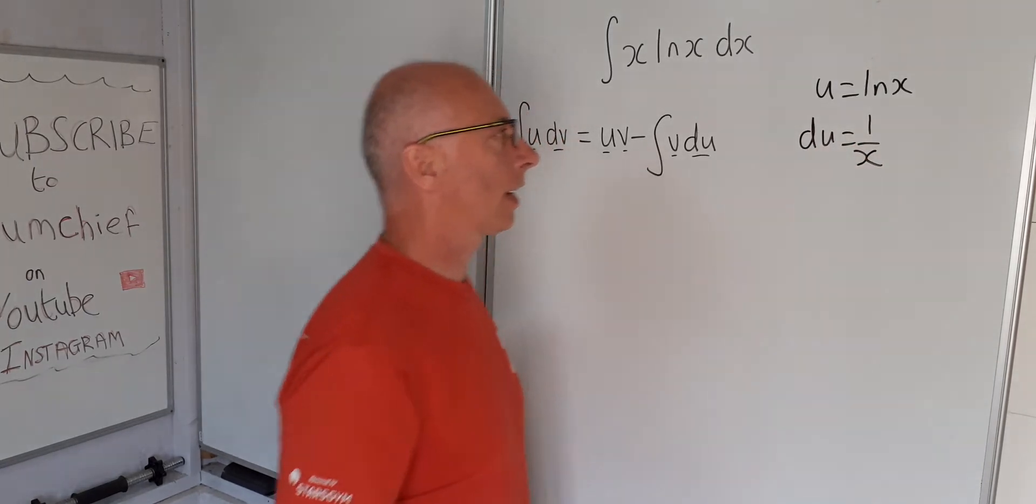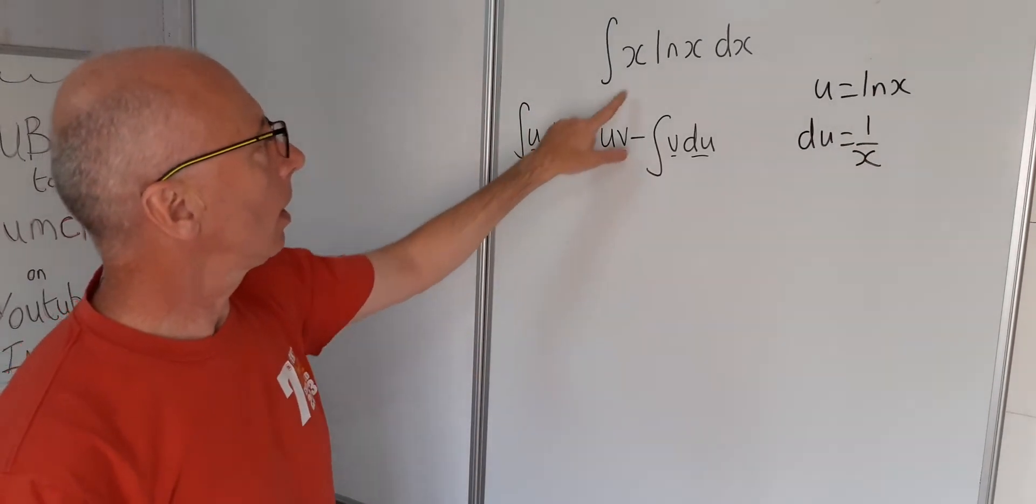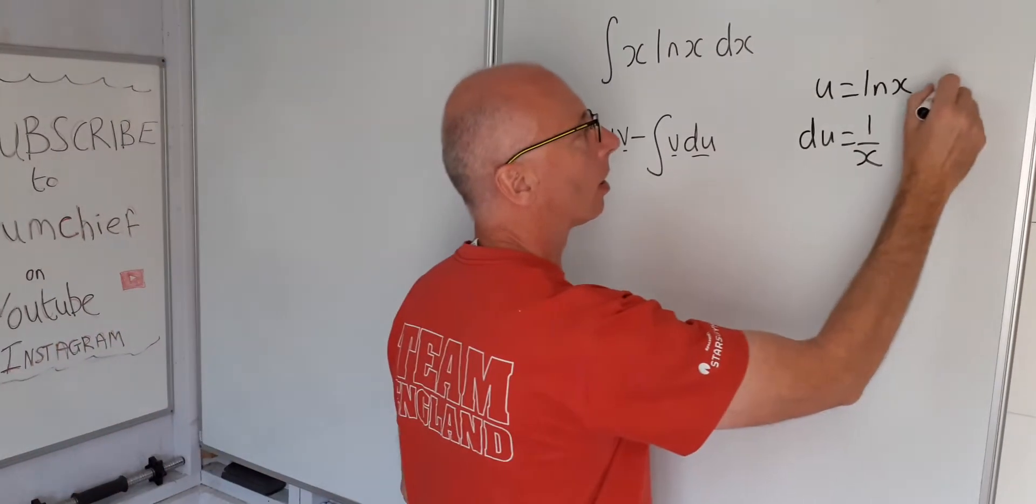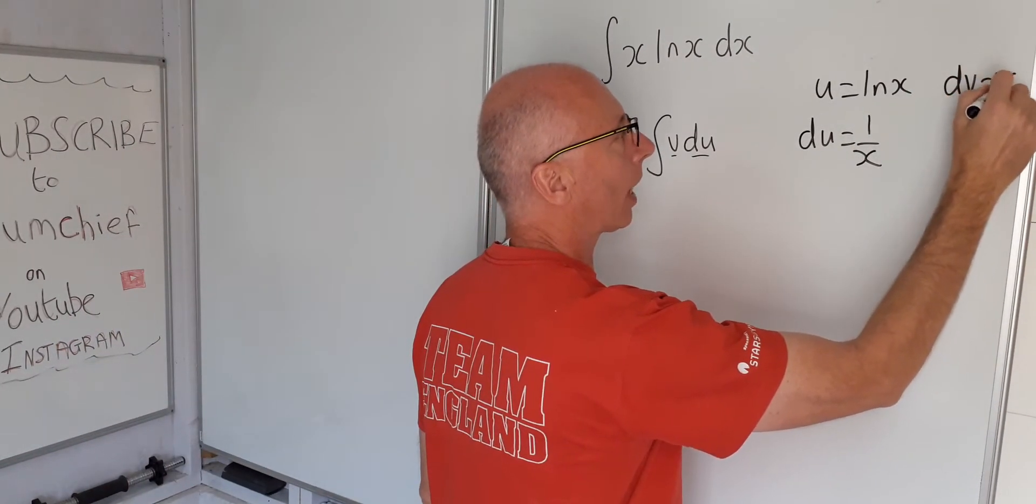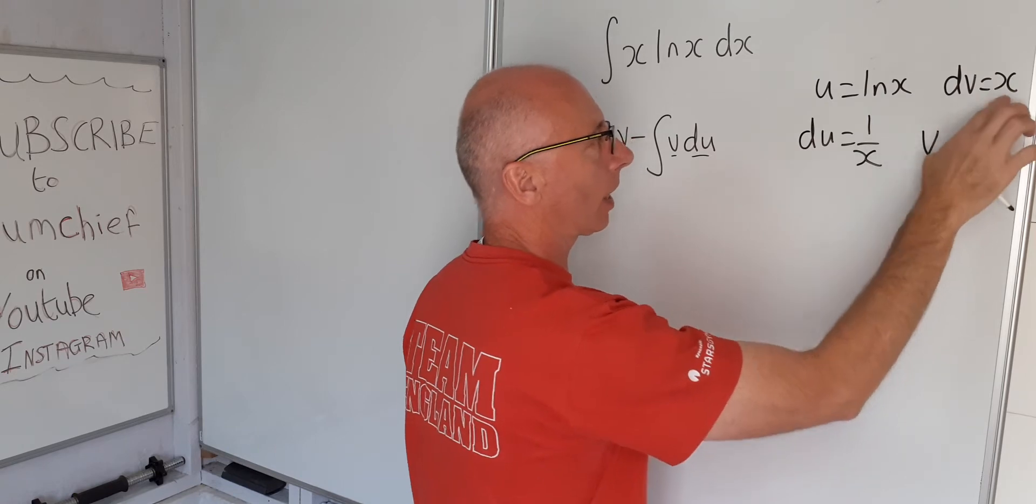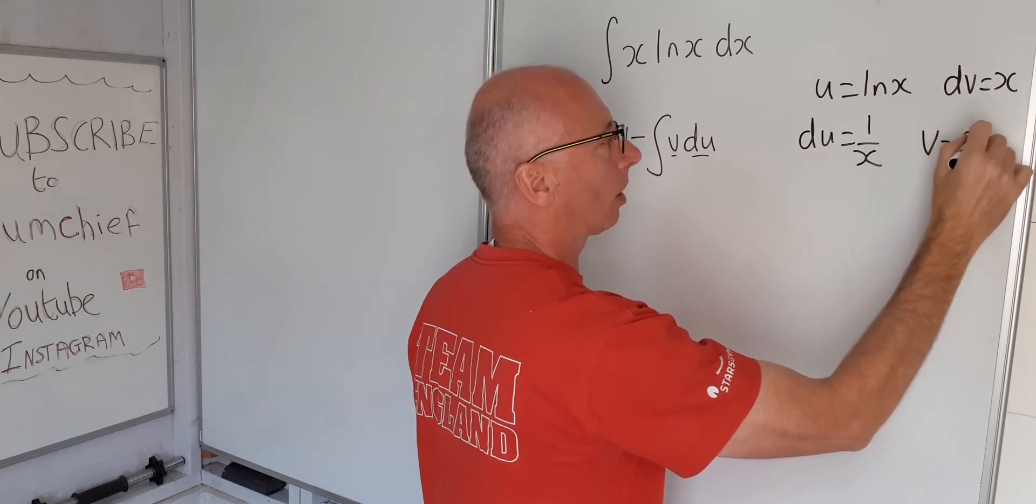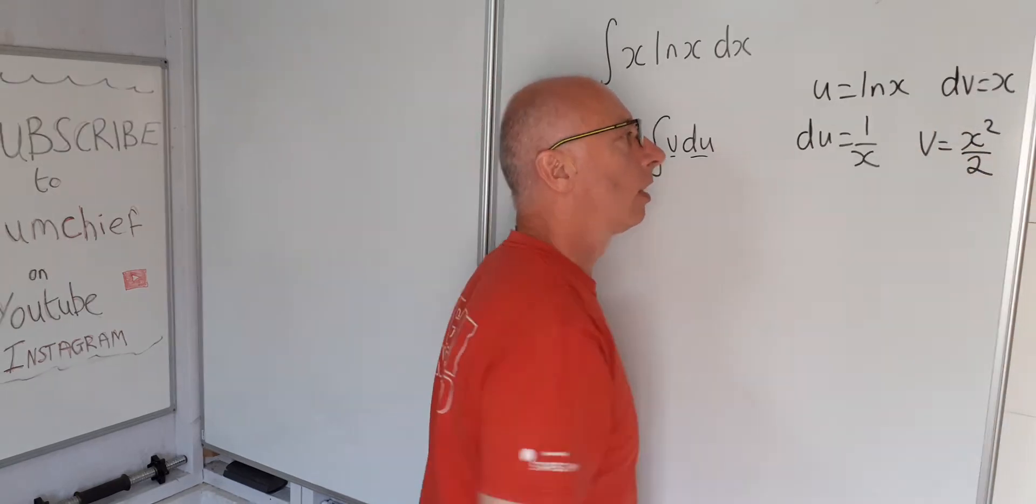is 1 over x, and then that leaves our dv to be x. So dv equals x, and then if you take the integral of x we get x squared over 2.